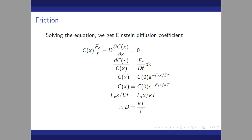Solving the flux equation with the condition that at equilibrium the external force equals zero, we get Cx = C₀ exp(−Fe x / kT). Taking this result, we obtain D = kT/f — the Einstein diffusion coefficient. So the diffusion constant can be calculated from Boltzmann's constant k, temperature T, and friction coefficient f.